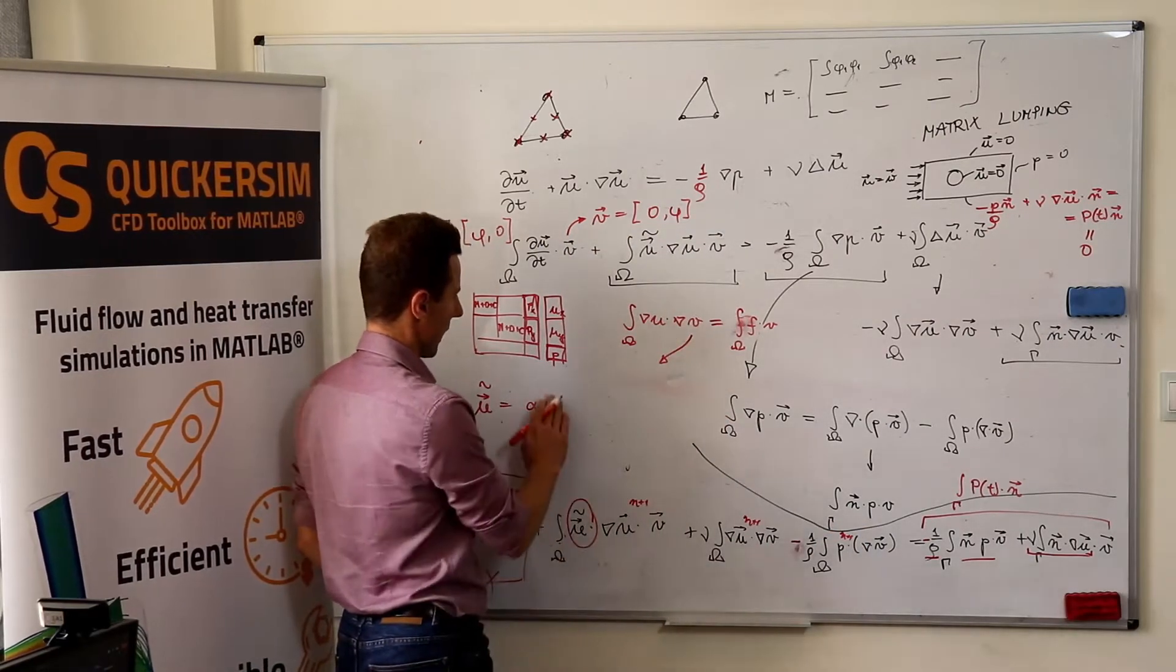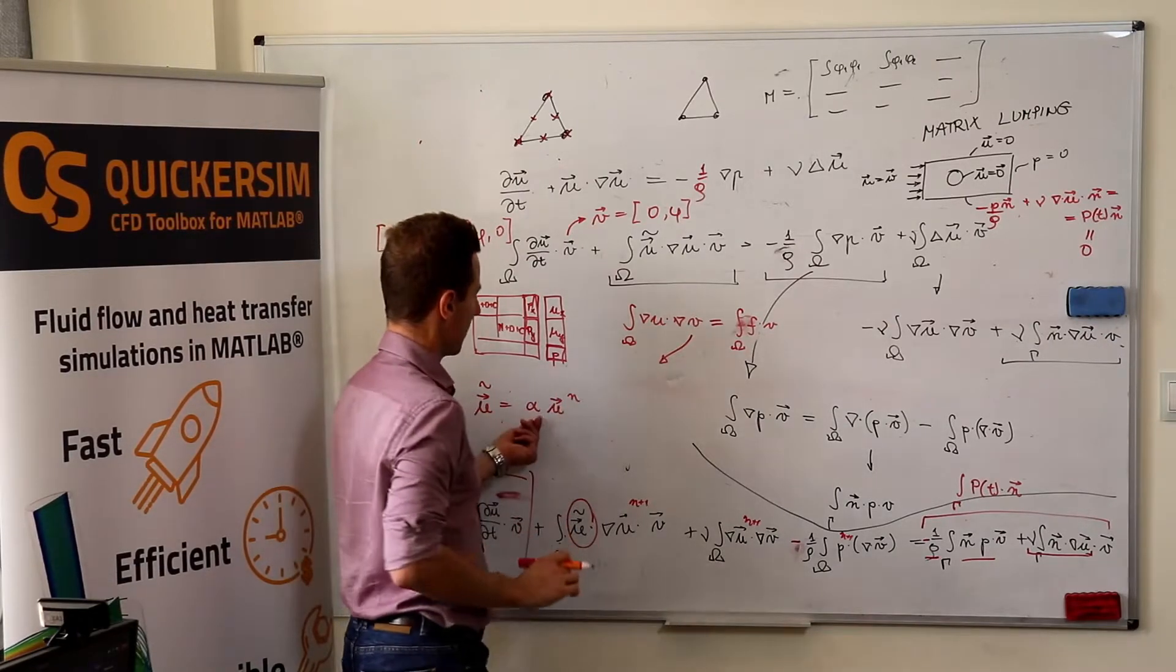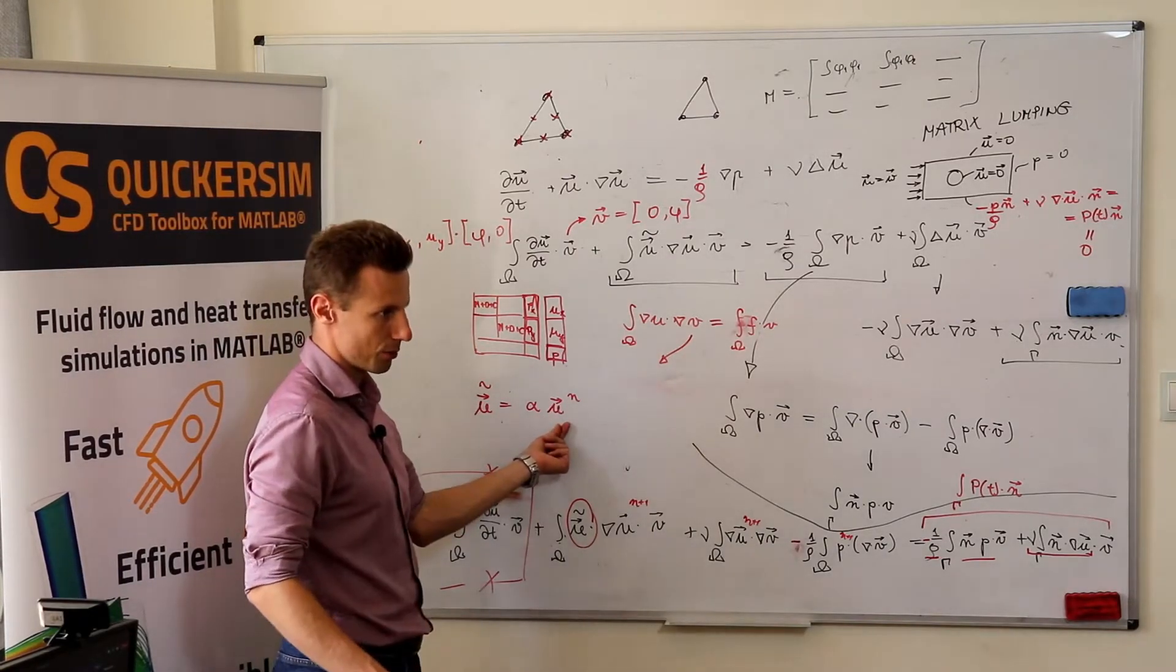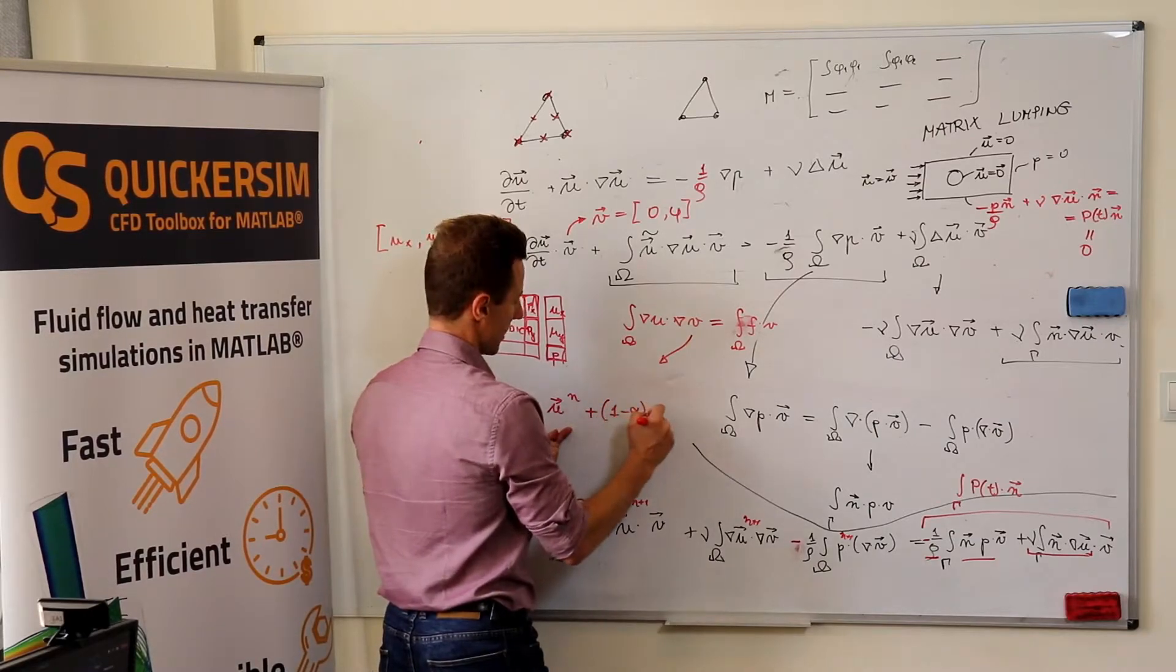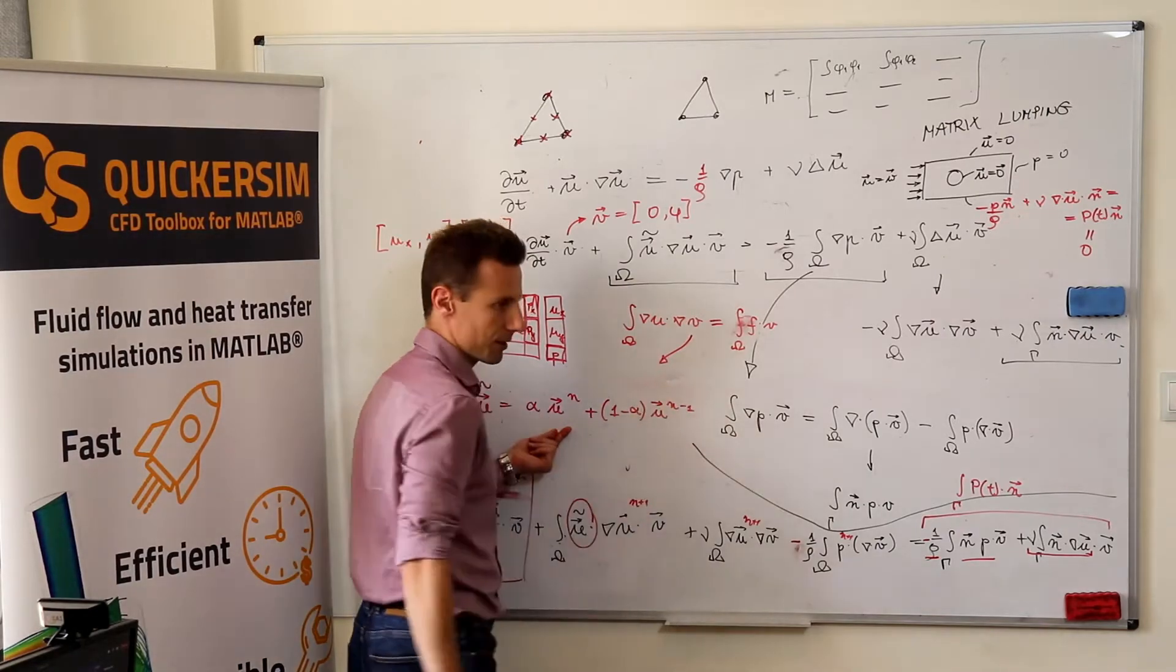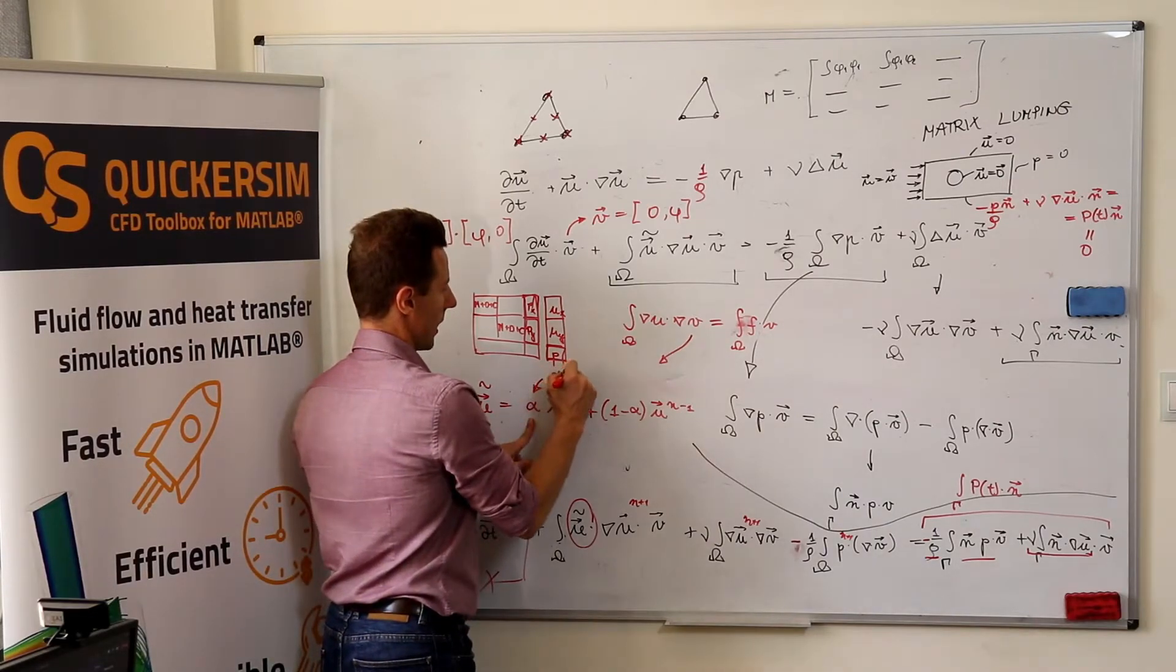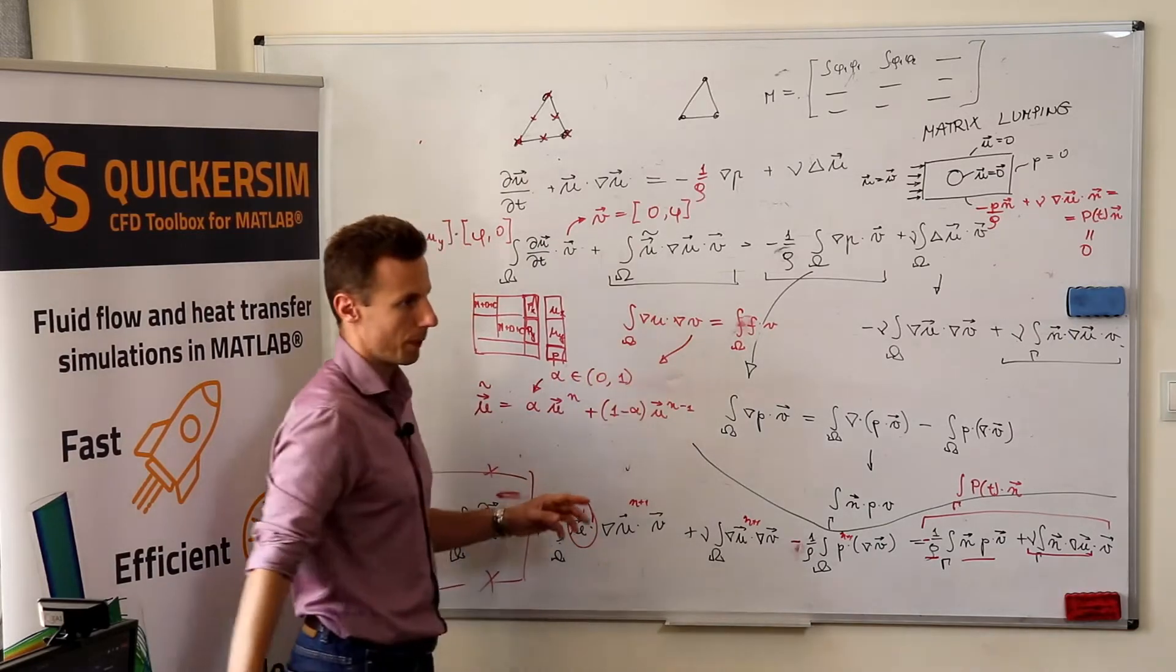So, the under relaxation means that you take some portion of the velocity field from the previous solution times one minus alpha from the even earlier solution, where, meaning that alpha is somewhere from zero to one.